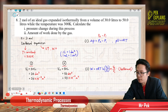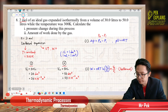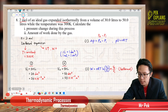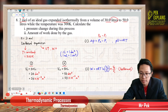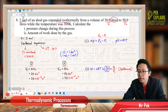So here it provides the number of moles of gas — this is a kind of isothermal expansion. It gives us the initial volume and the final volume in liters, and then the temperature is 300 Kelvin. So I put the initial volume as V1 and the final volume as V2.